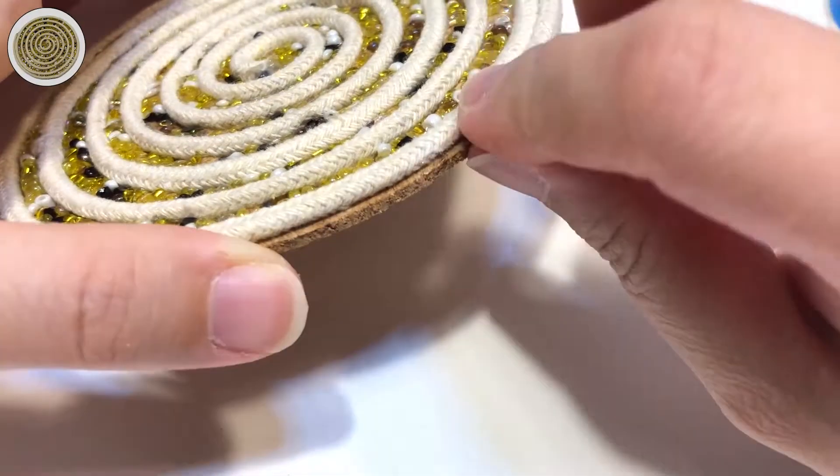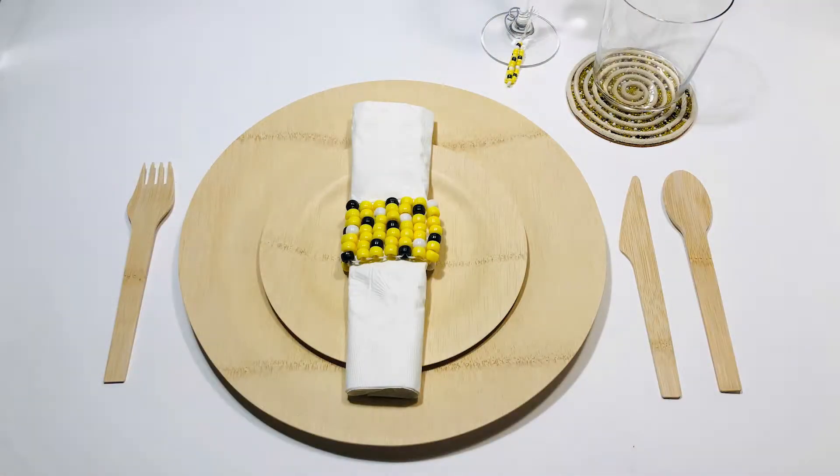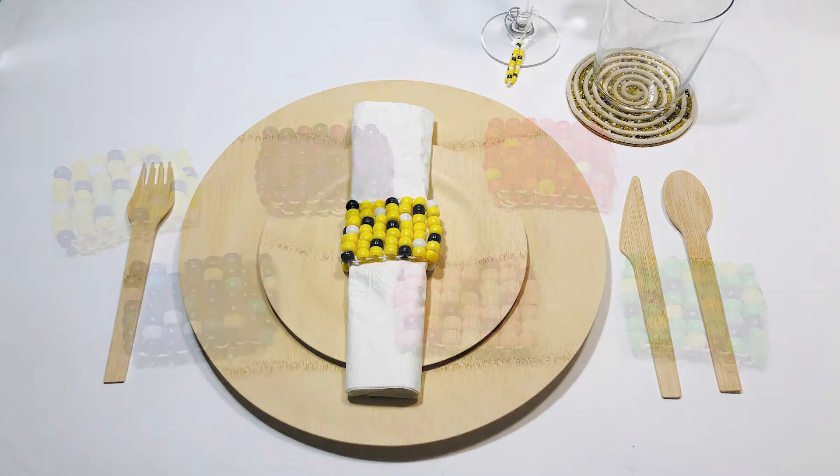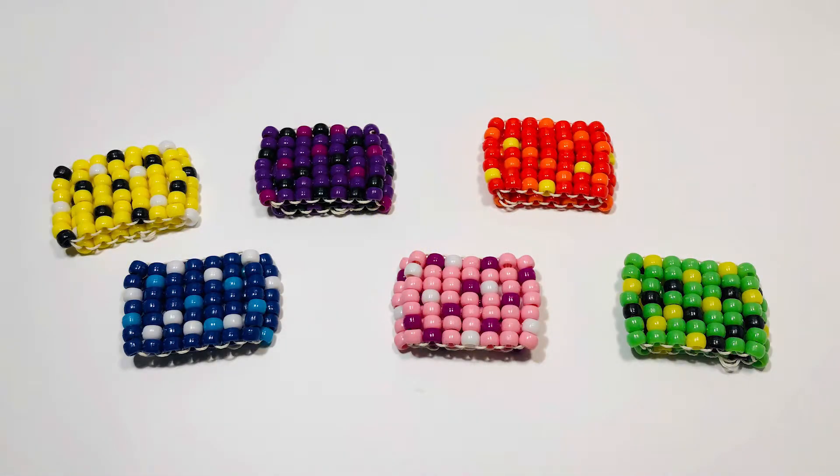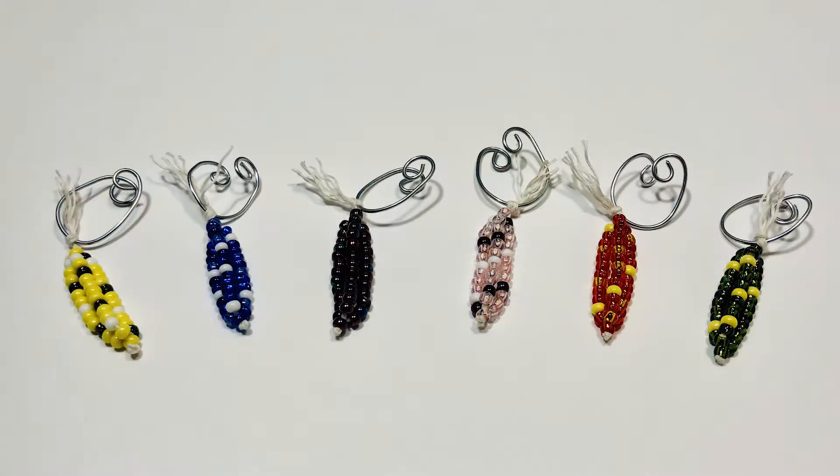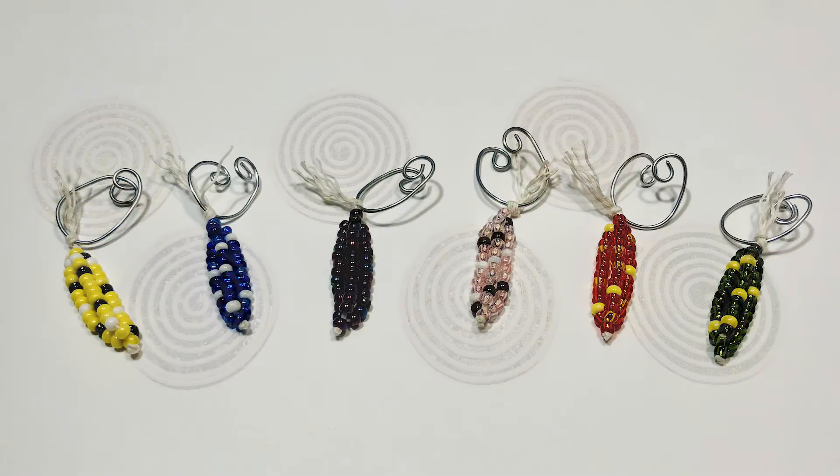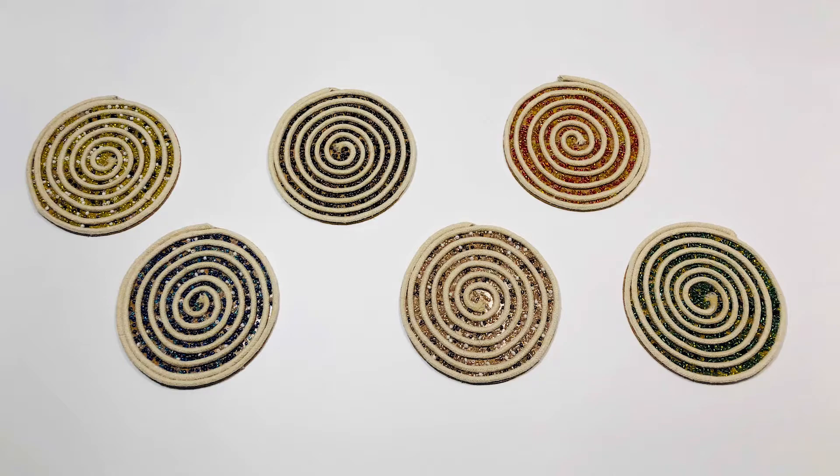And here we have our full table setting. Because corn comes in a variety of colors, you can make a version for each guest at your dinner. It's a beautiful way to make each seat unique and a practical way to keep track of everyone's drink.